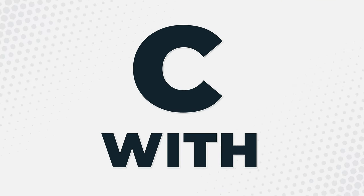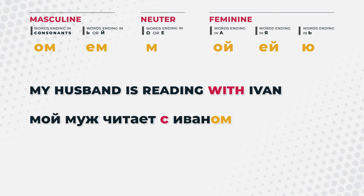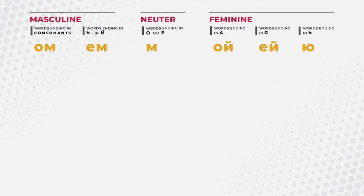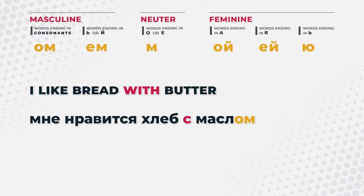Now let's talk about the two primary reasons when you need to use the instrumental case. The first primary use is with the preposition SA, meaning 'with.' SA plus the instrumental case always means 'with.' For example: 'My husband is reading with Ivan' — Moi muzh chitayet s Ivanom. Ivan goes into the instrumental case. If we wanted to say 'I like bread with butter' — Mne nravitsya khleb s maslom. Masla is butter — you just add the OM ending. It's neuter, so you just add the M and you get 'with butter.' SA plus the instrumental case means 'with.'